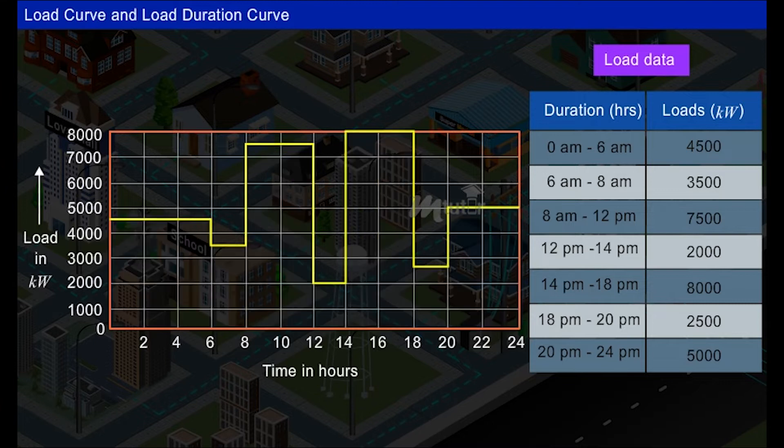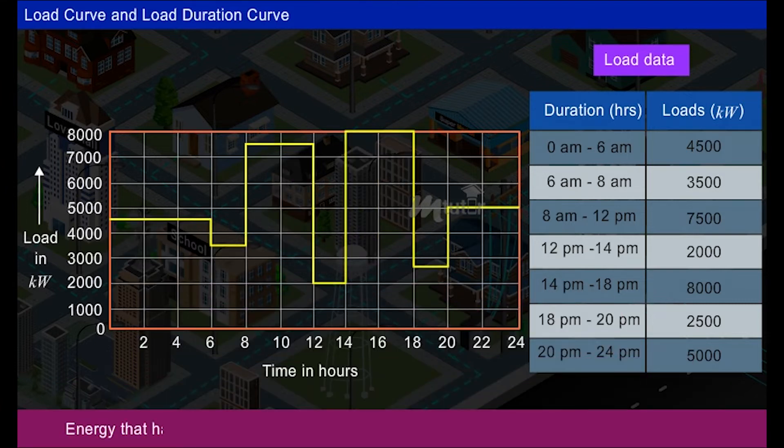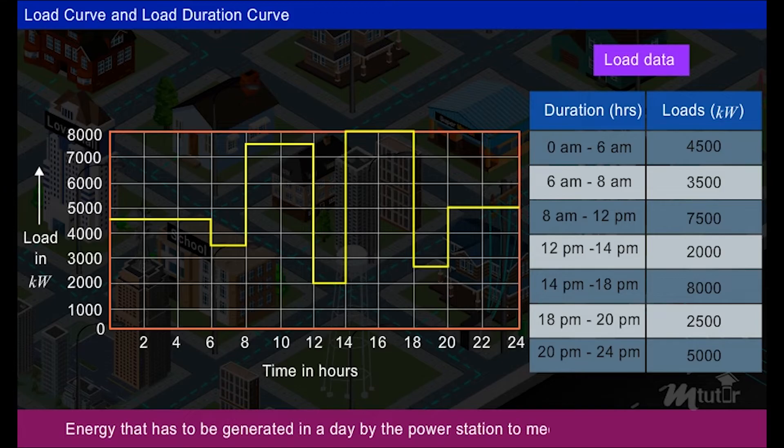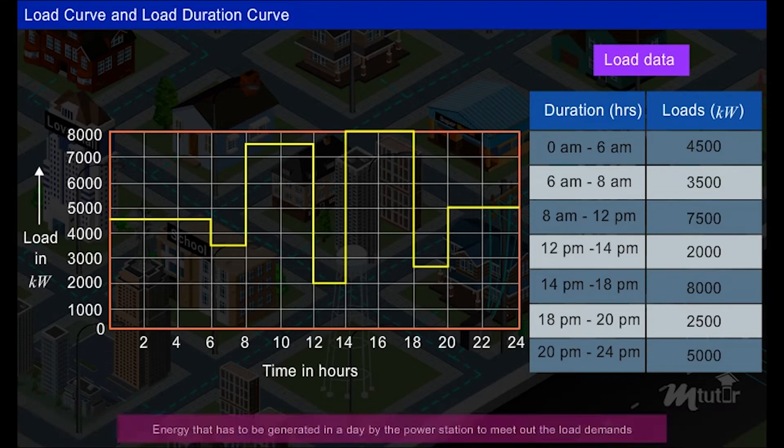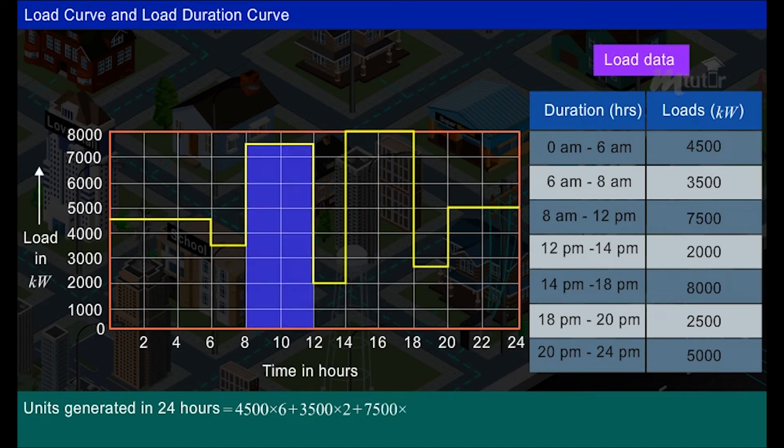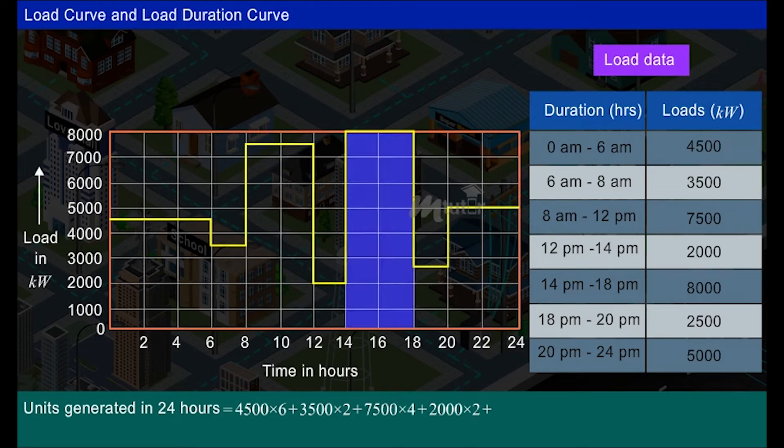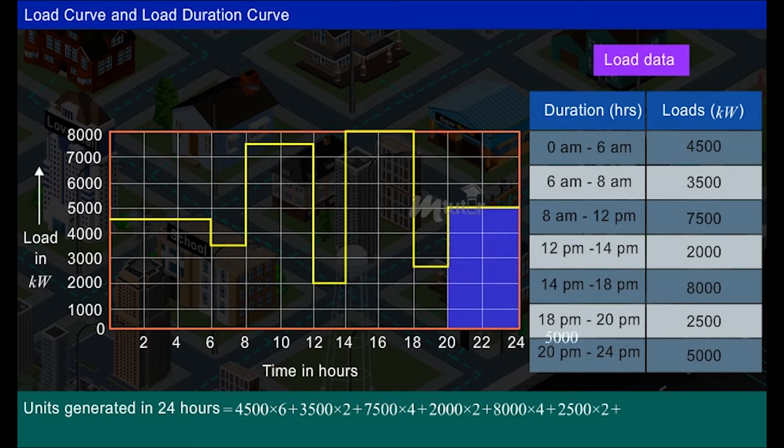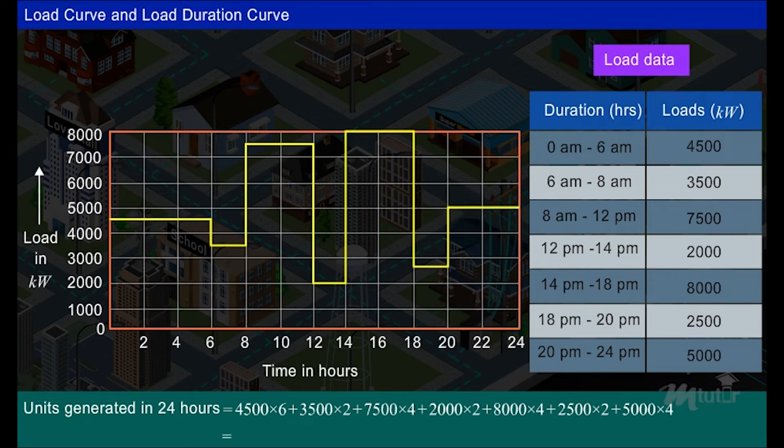The area under the load curve represents the energy that has to be generated in a day by the power station to meet out the load demands. So, the units generated by the generating station of the Lovacity is equal to 4500 into 6 plus 3500 into 2 plus 7500 into 4 plus 2000 into 2 plus 8000 into 4 plus 2500 into 4, which is equal to 125,000 kilowatt hour.